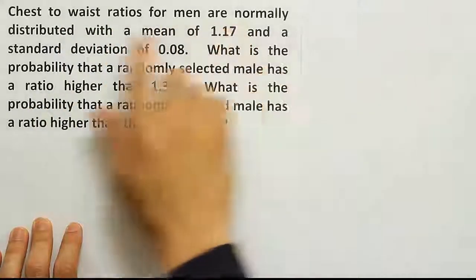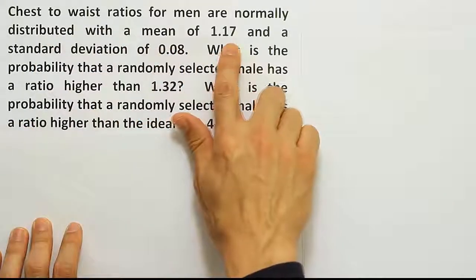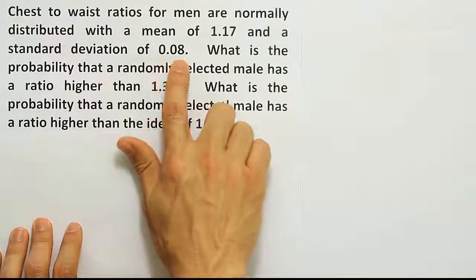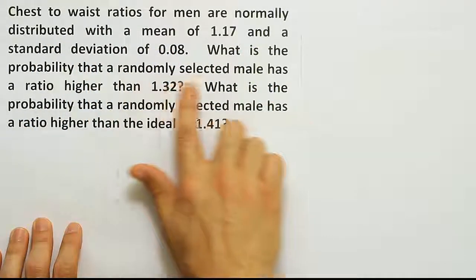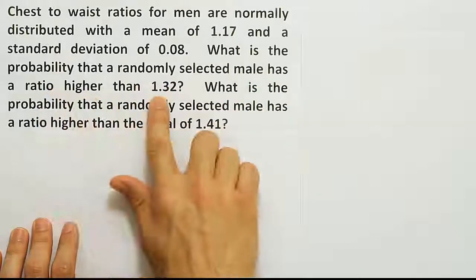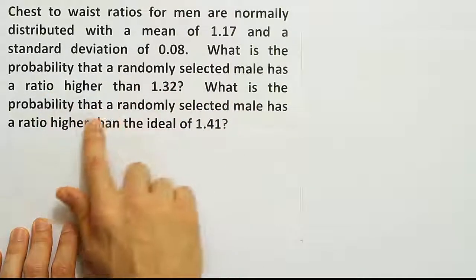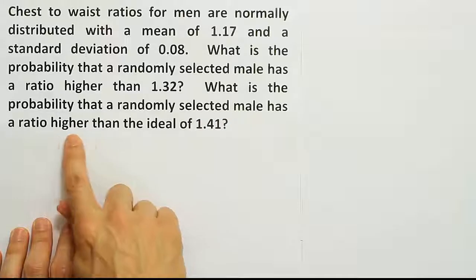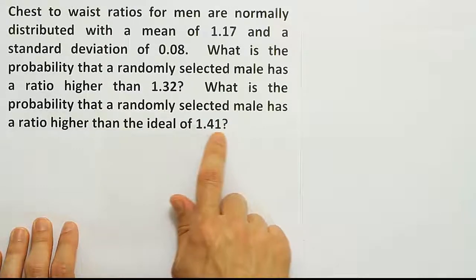Chest to waist ratios for men are normally distributed with a mean of 1.17 and a standard deviation of 0.08. What is the probability that a randomly selected male has a ratio higher than 1.32? What is the probability that a randomly selected male has a ratio higher than the ideal of 1.41?